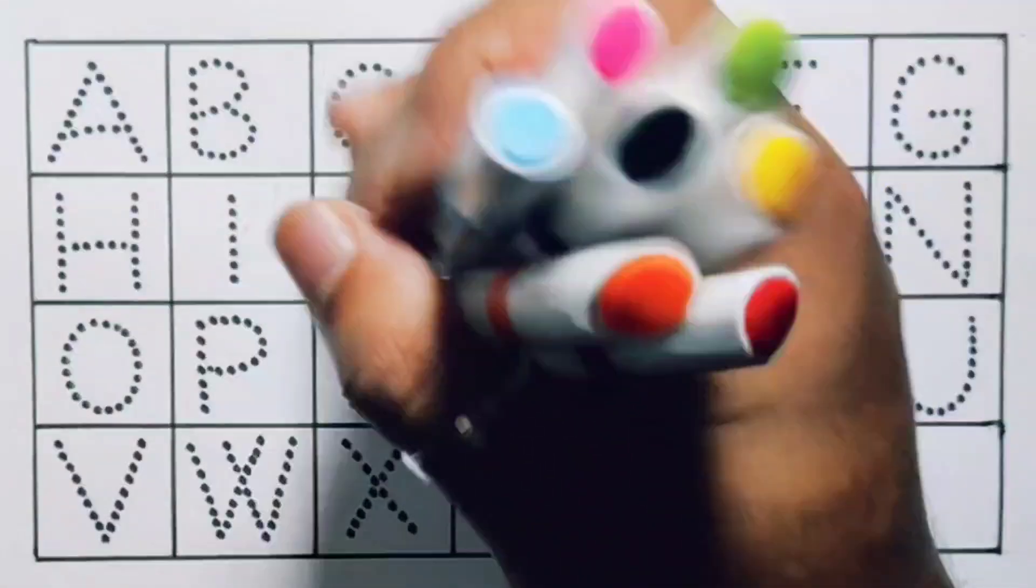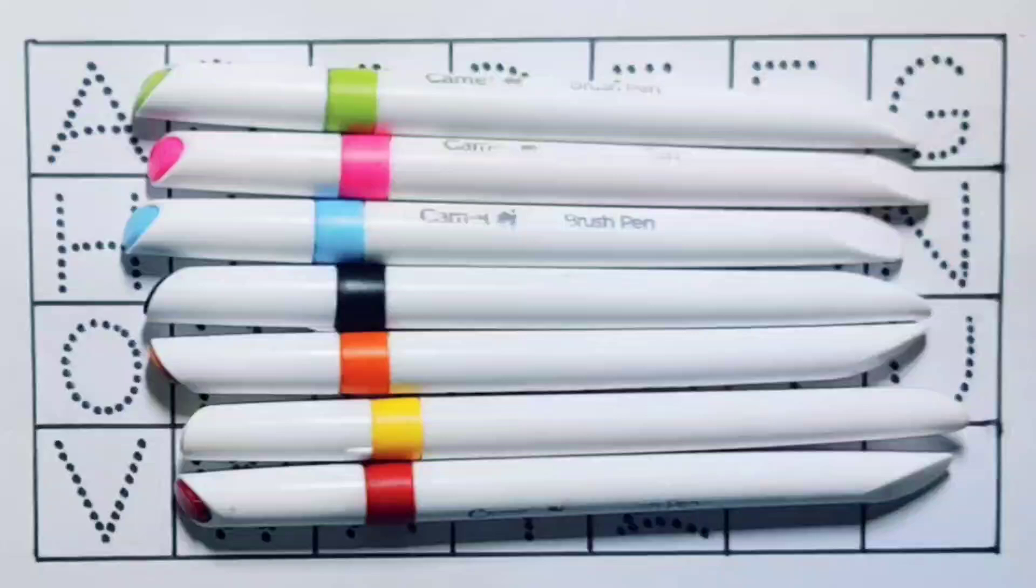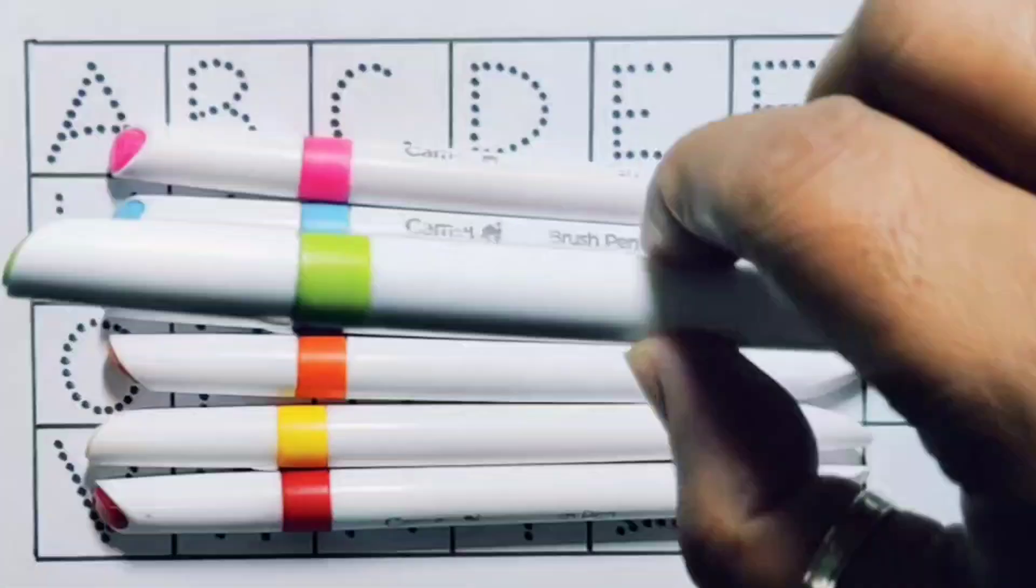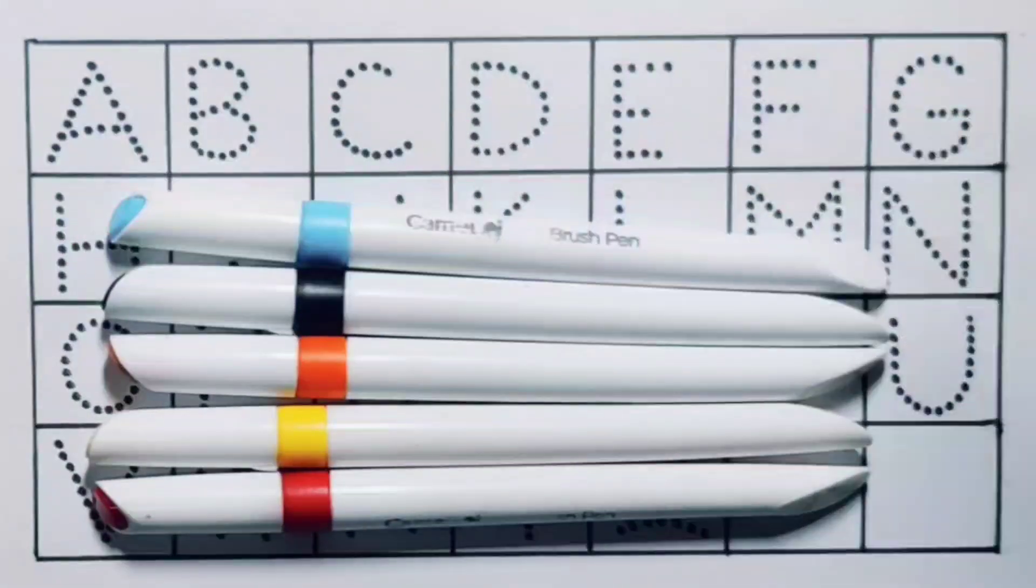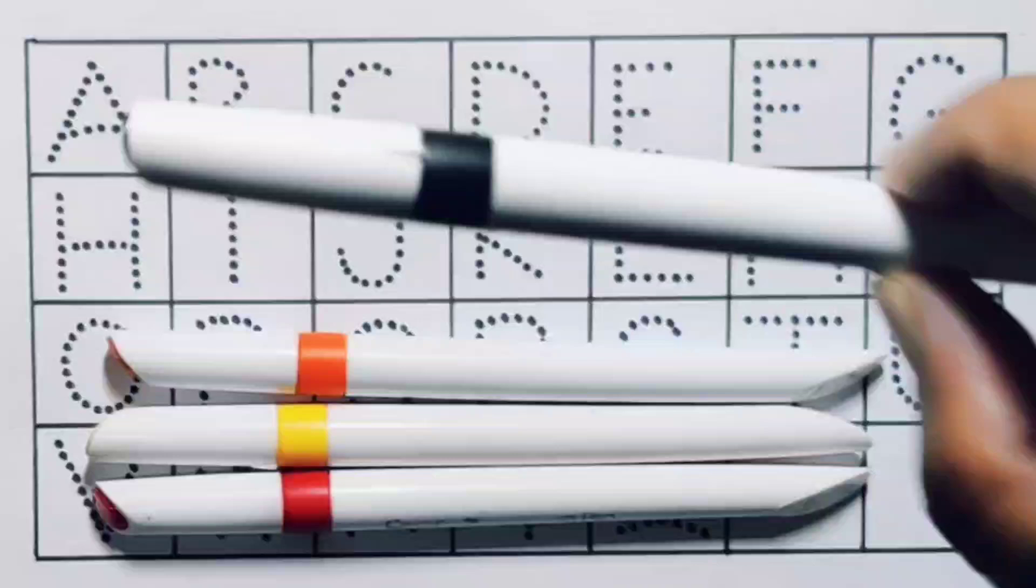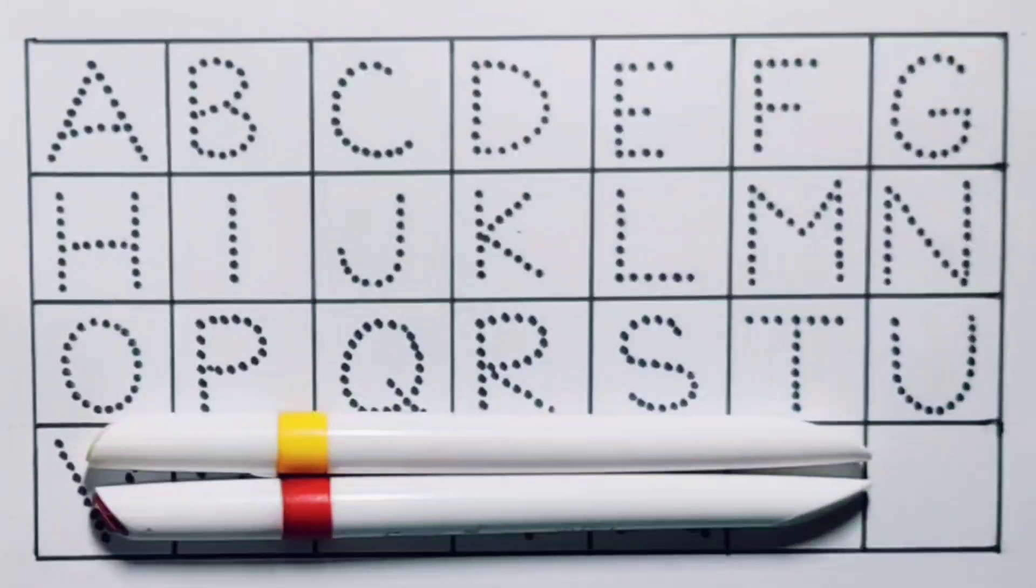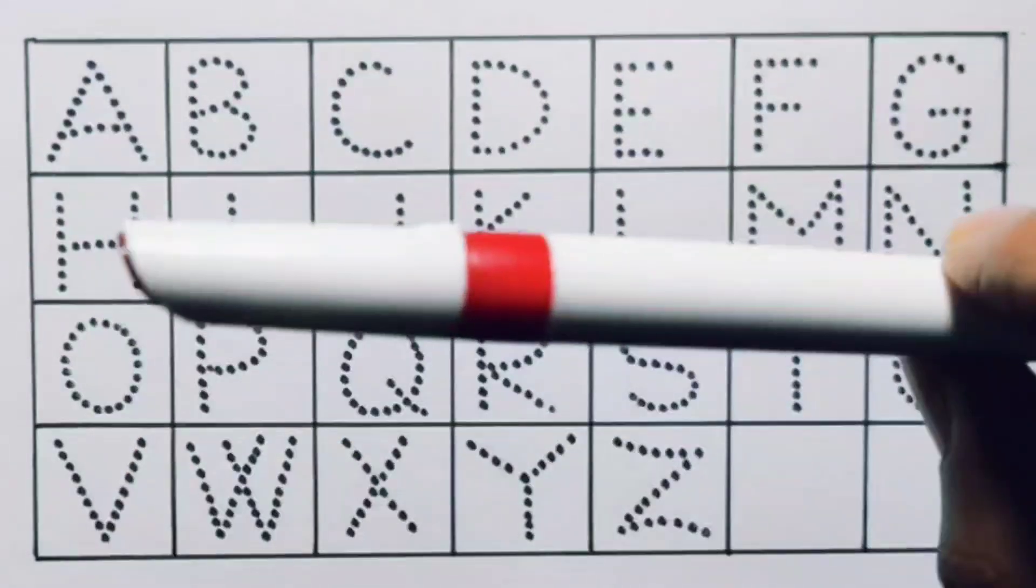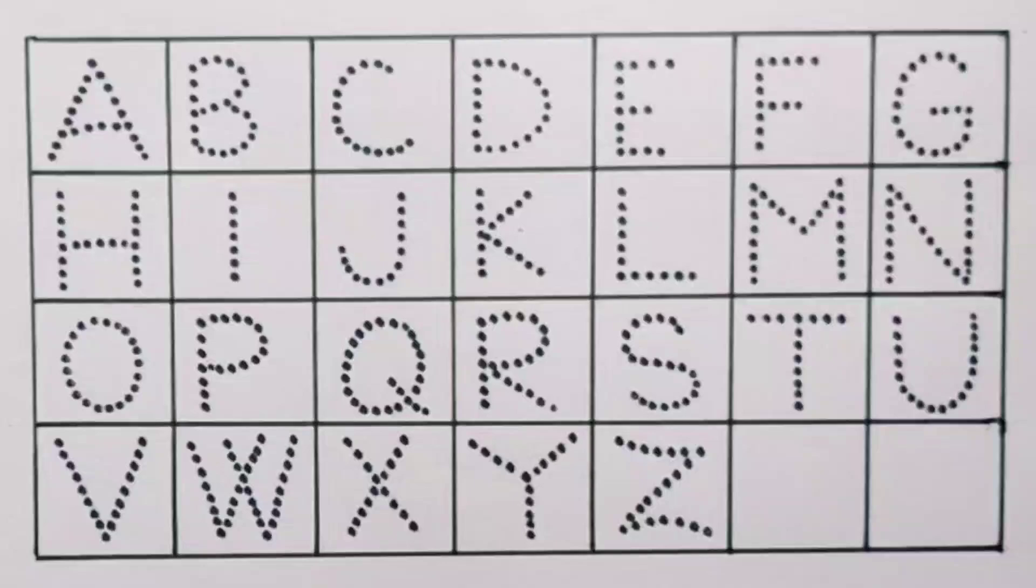Hello kids, welcome to my new video. First you're going to know the colors name: light green color, pink color, sky blue color, black color, orange color, yellow color, red color. Now let's learn the alphabet A to Z.